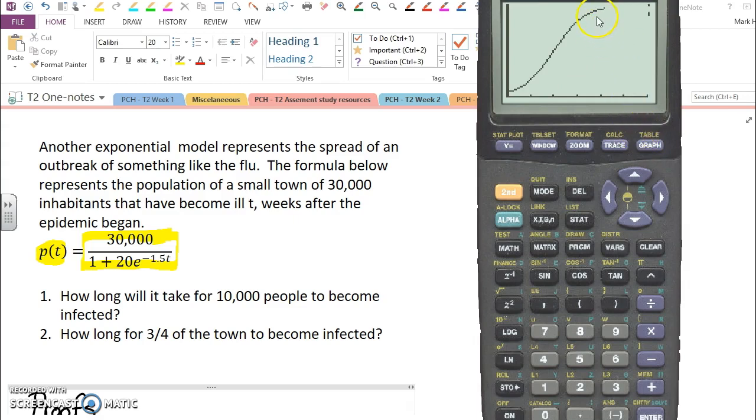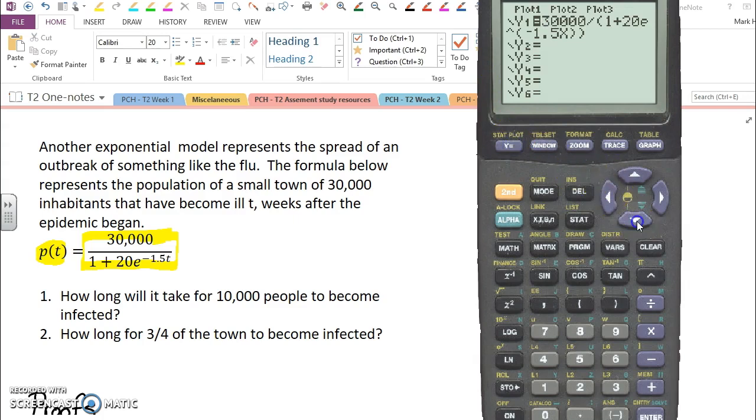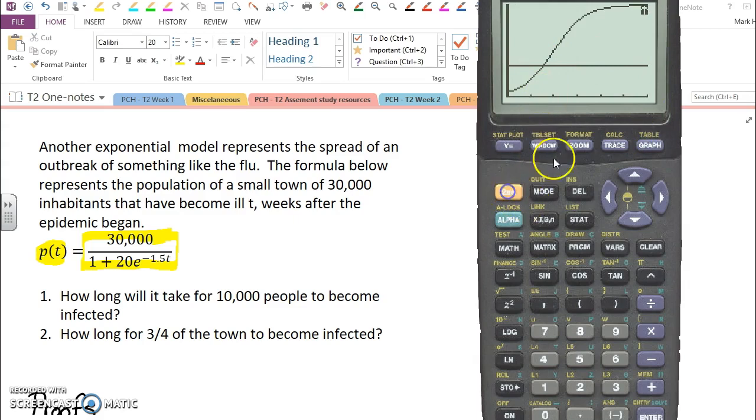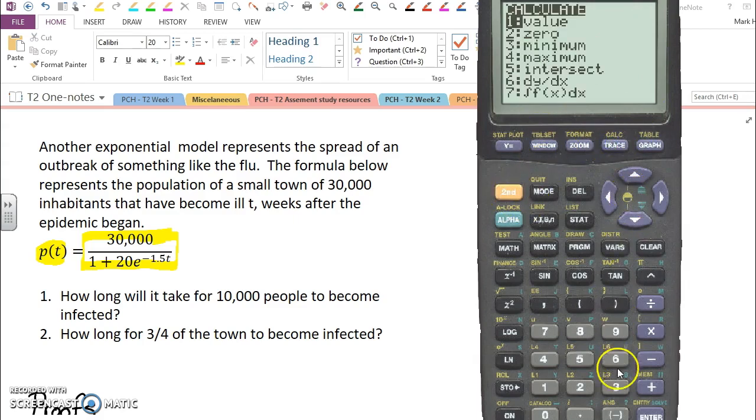We have a logistic function. So now, how long did it take for 10,000 people to become infected? Well, that's going to be somewhere around here somewhere, but I really don't know until I go to my graph and I draw a line at 10,000. Now I can see it's exactly that point there and I'll calculate my intersection.